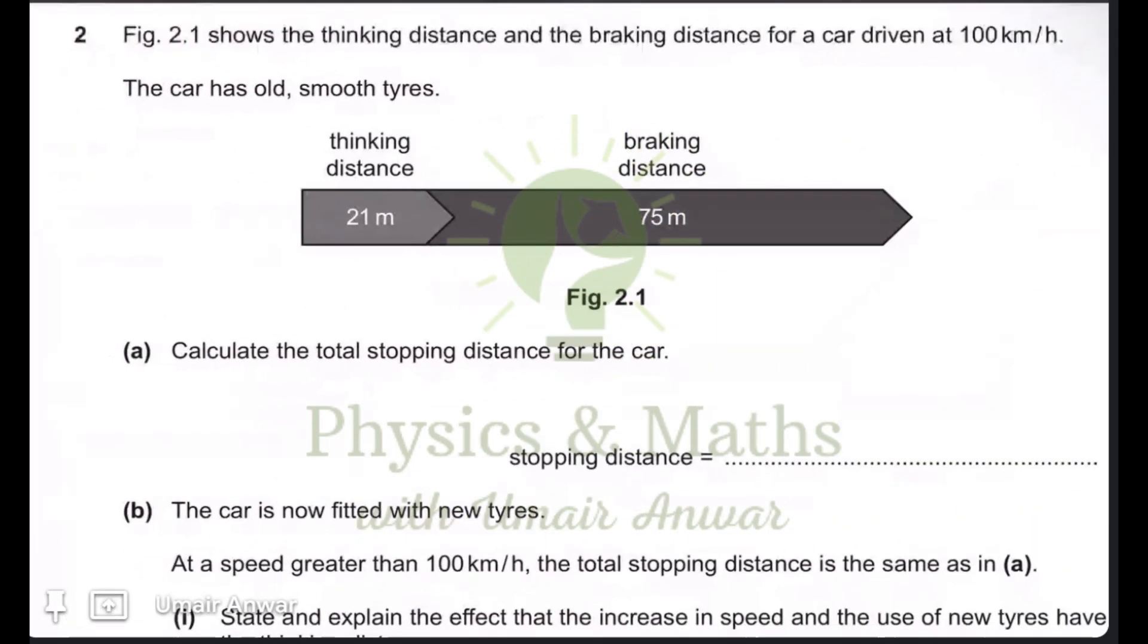Question number two: Figure 2.1 shows the thinking distance and the braking distance for a car driven at 100 kilometers per hour. The car has old, smooth tires.